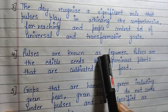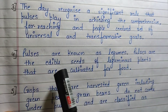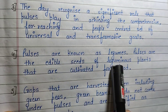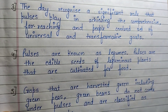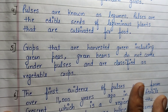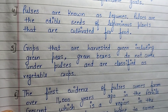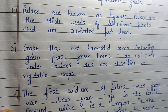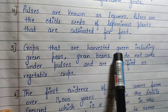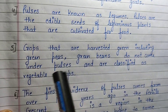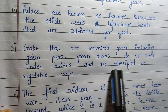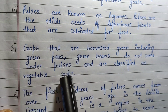Pulses are also known as legumes. They are the edible seeds of leguminous plants that are cultivated for food. Crops that are harvested green, including green peas and green beans, do not come under pulses and are classified as vegetables.